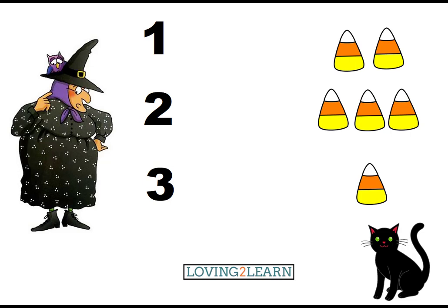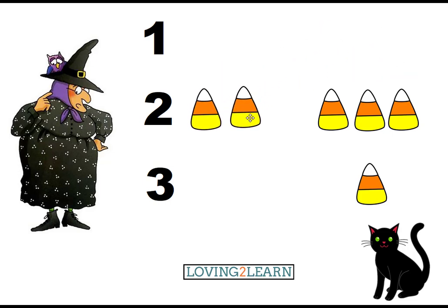Mildred and Midnight are counting candy corn, but the candy corn got mixed up. Let's help them! We'll start counting here. Count with me: one, two — two candy corns. Where's the number two? Here's the number two, so we're gonna move those two candy corns down. Now we have the number two and...